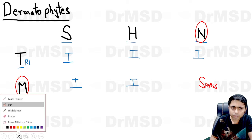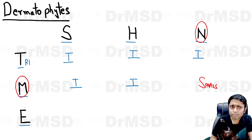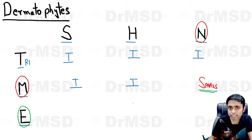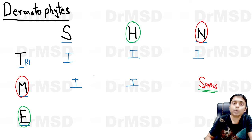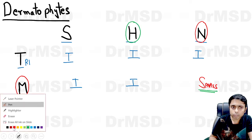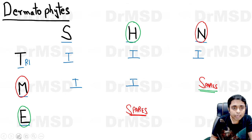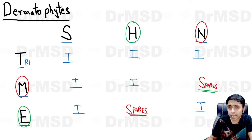Whereas if you look at Epidermophyton, alphabetically M was close to N, which is why Microsporum spares nails. Likewise, E is close to H, which is why Epidermophyton is not going to involve hairs. So Epidermophyton spares hair and instead infects skin and nails.